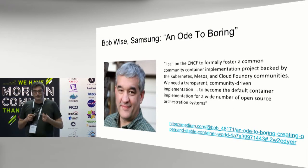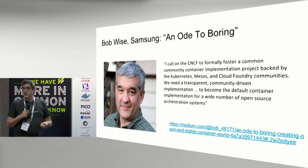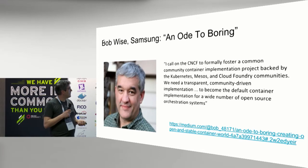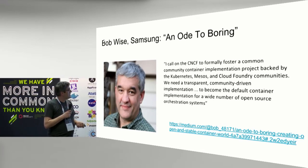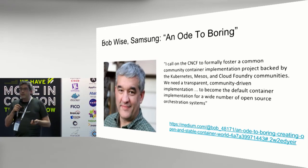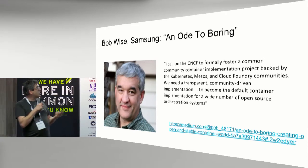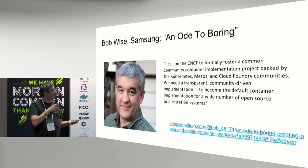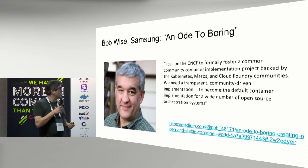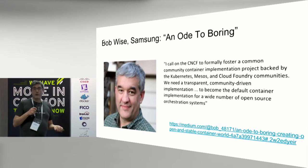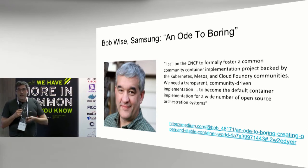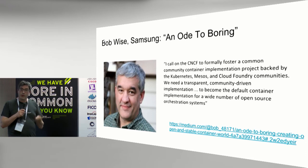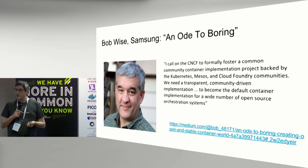Just to wrap — something that happened late last year: Sam Ramji called upon the CNCF to foster a common community container implementation that can be used by Kubernetes, Microsoft, and Cloud Foundry — transparent to become the default container implementation for a wide number of open source orchestration systems. He called it an ode to boring — infrastructure should be boring. Since that time, both ContainerD from Docker and RKT from CoreOS have been proposed as container implementations and are being voted on right now.